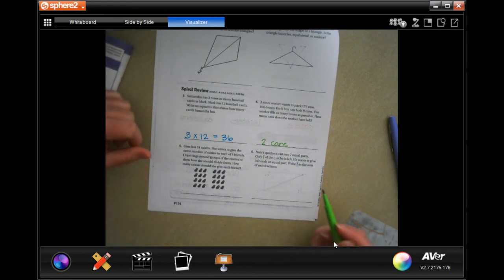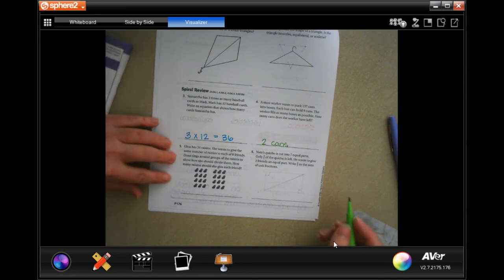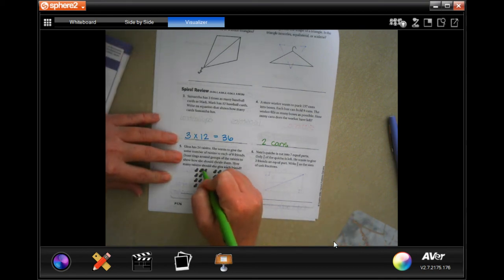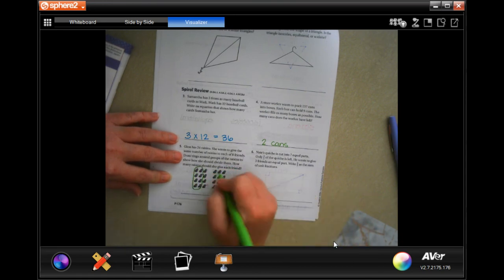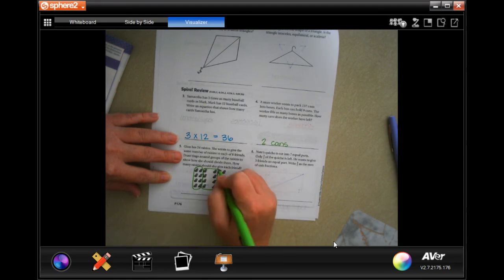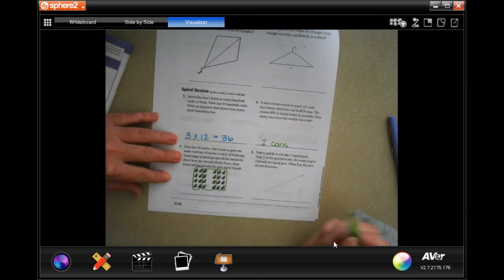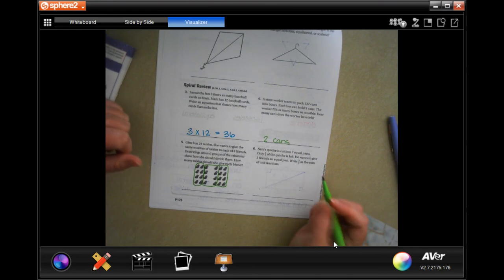Gina has 24 raisins. She wants to give the same number of raisins to each of eight friends. Draw rings around the groups of raisins to show how she should divide them. How many raisins does each friend get? Well, they're in stacks of four. That's good because it means that two stacks is equal to eight. So I have three sets of eight.